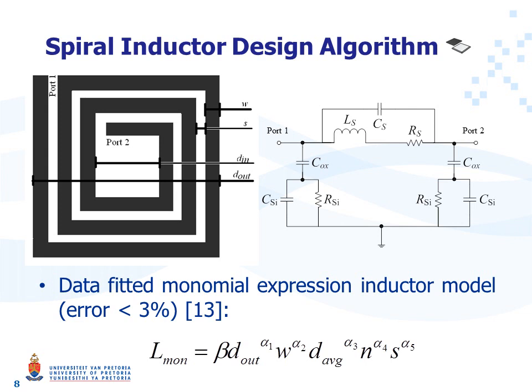The figure on the right is a nine-component single spiral inductor model, with L_s the wanted quantity — the inductance of the spiral inductor. The inductance can be calculated with a data-fitted monomial expression that has an error of less than 3%. The inductance is dependent on the outer diameter, the width of the spiral, the average between the outer and inner diameter, the number of turns, and the pitch between the turns. The coefficients alpha 1 to 5 and beta are geometry-dependent coefficients and they depend on whether the spiral is square, circular, hexagonal, octagonal, and so on.